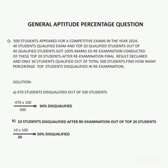Solution: Part A — 470 students disqualified out of 500, so after calculation, 94% disqualified. Part B — 10 students passed out of 20 in the examination, so after calculation, 50% of the students disqualified in the examination.